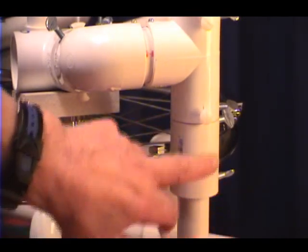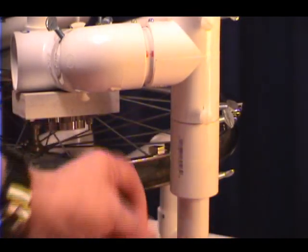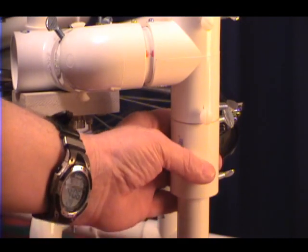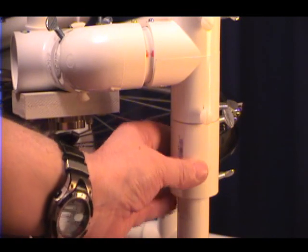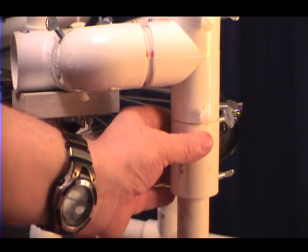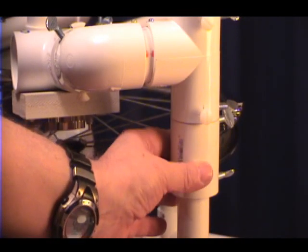This piece is a PVC union fitting and it's normally used to join two pieces of one and a quarter inch PVC pipe together.